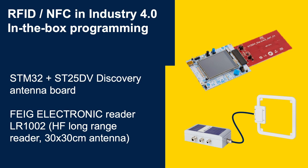To demonstrate factory inbox programming, we're using the dynamic tag discovery board with dynamic tags mounted along with an antenna, and one of our partners who makes a high-power NFC reader-writer for factory use — FAG. This is the LR1002 long-range reader partnered with a 30 by 30 centimeter antenna. Now let's watch a quick video to highlight this use case.